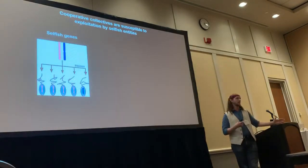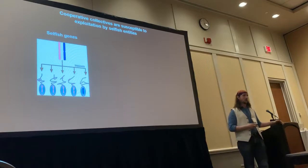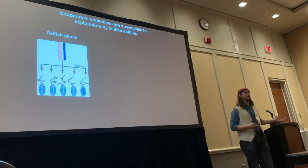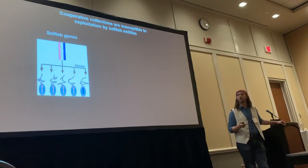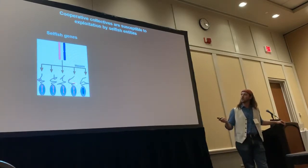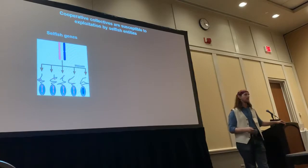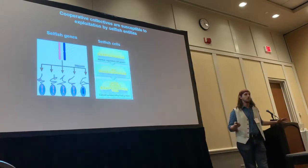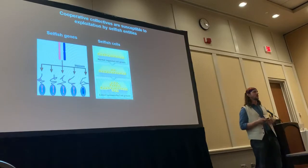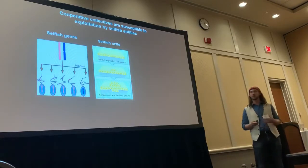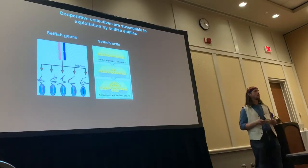So for example, it's possible to have selfish genes, like in the case of those that give rise to meiotic drive, which gives some gametes a fitness boost at the expense of others. It's also possible to have selfish cells — for cells to proliferate at the expense of other cells, like in the case of cancer.